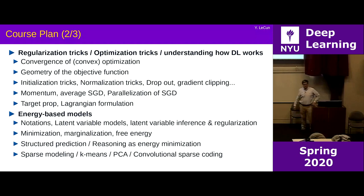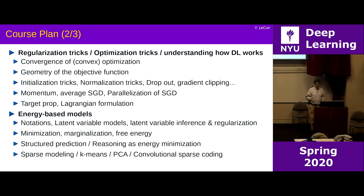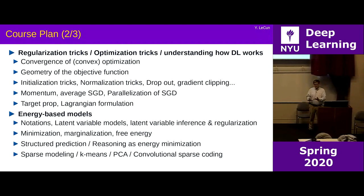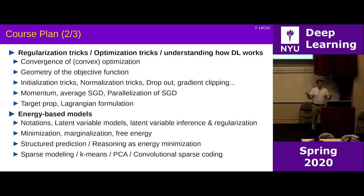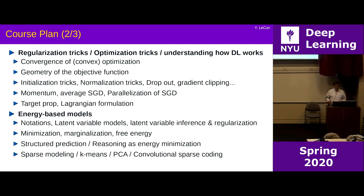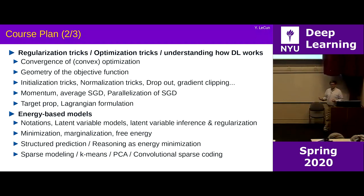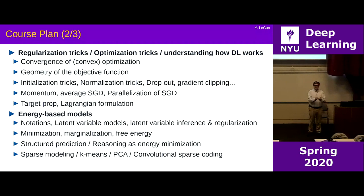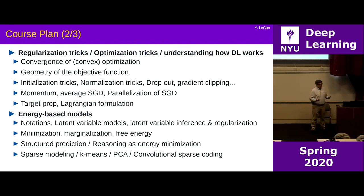Then I'll switch to my favorite topic: energy-based models. This is a general formulation of many approaches to learning — supervised, unsupervised, self-supervised — including inference, where you search for the value of variables nobody tells you. That can be thought of as implementing reasoning with neural nets: you have an energy function optimized with respect to some variables, and the result is the value of those variables.